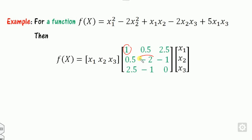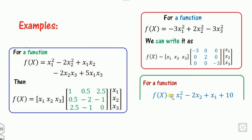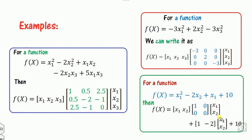To verify: the diagonal entries are the coefficients of x1 squared, x2 squared, and x3 squared. The element A13 is half the coefficient of x1*x3, so if that coefficient is 5, then A13 = 5/2. For a function with three variables where the coefficient of x1 squared is -3, x2 squared is 2, and x1*x2 is 0, all other off-diagonal terms are 0. For a 2-variable quadratic, A11 = 1, A22 = 0, and the linear part can be expressed as a separate vector.